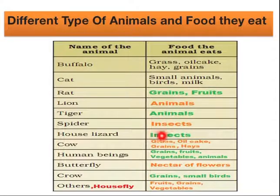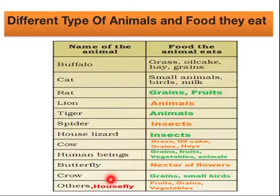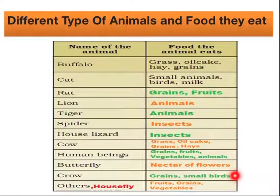Cow eats grass, grains, and hay. Human beings eat grains, fruits, vegetables, meat, eggs, and more. Butterfly eats nectar of flowers. Crow eats grains as well as small birds and house flies.